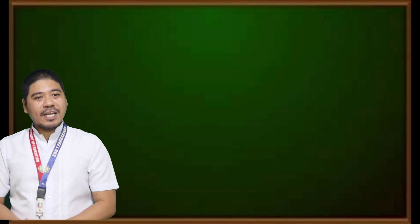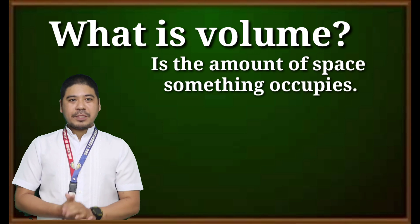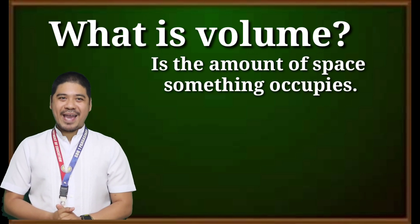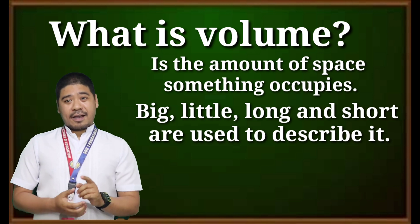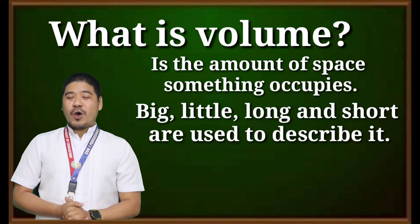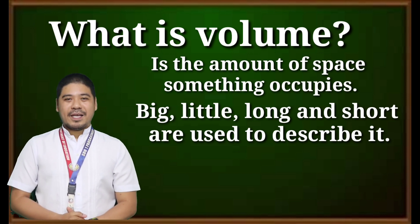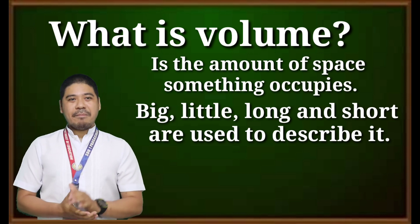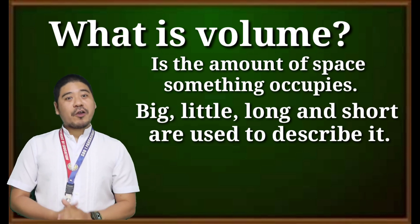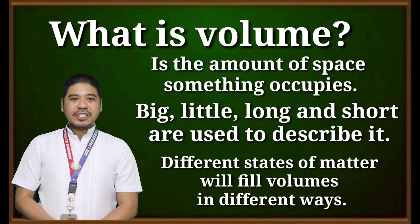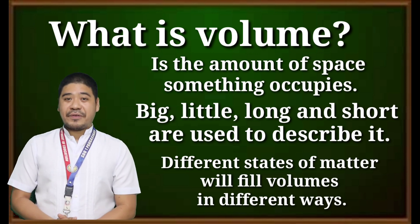Let us also unlock the term volume. Volume is the amount of space something occupies. Words such as big, small, long, or short are used to describe volumes. For example, a marble takes up a small volume while a star occupies a large volume. Different states of matter will fill volumes in different ways.